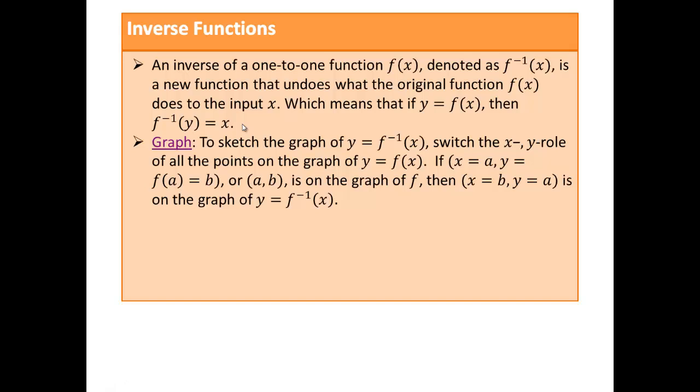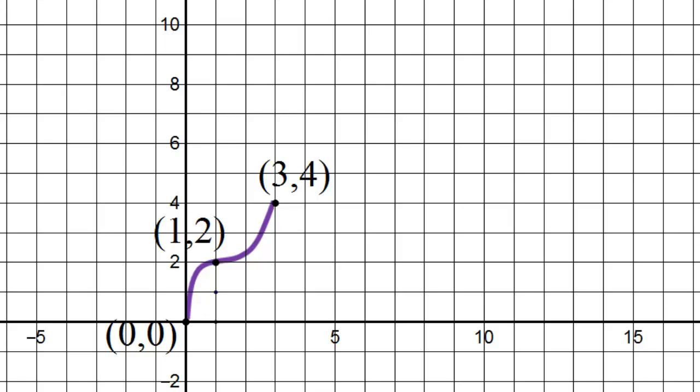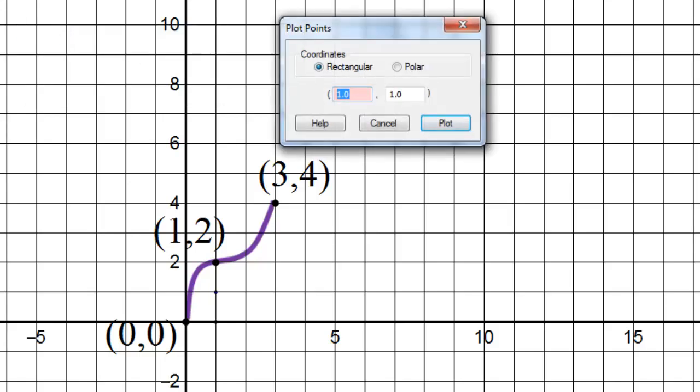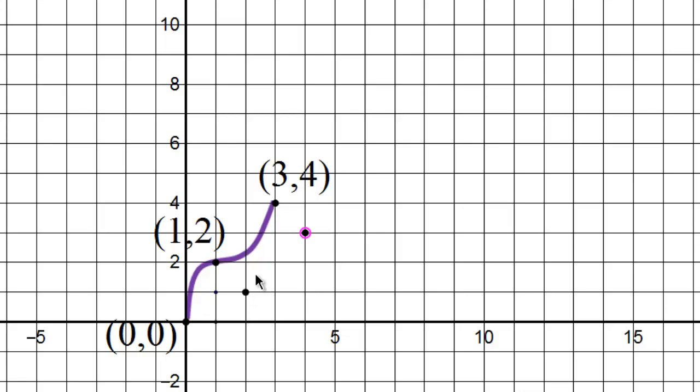And if you wanted to sketch the graph, you take the original function f of x, and all the coordinates a comma b, where b is f of a, will become b comma a. And that's how you graph it. So let's take a look at an example. Here is my function f of x. If I want f inverse of x, I would have to plot coordinates. So instead of 0, 0, if you switch that, it will become 0, 0. The coordinate 1, 2 will become 2, 1. The coordinate 3, 4 will become 4, 3. So we have the coordinates. This is how the graph would look.